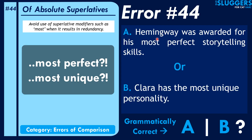The next subcategory of the errors of comparison would be that of absolute superlatives. It basically says that avoid the use of superlative modifiers such as 'most' when it results in redundancy — that means in repetition. Like you can't say 'most perfect.' Perfect is already enough — perfect is 100%, and there's nothing like more 100% than 100%.